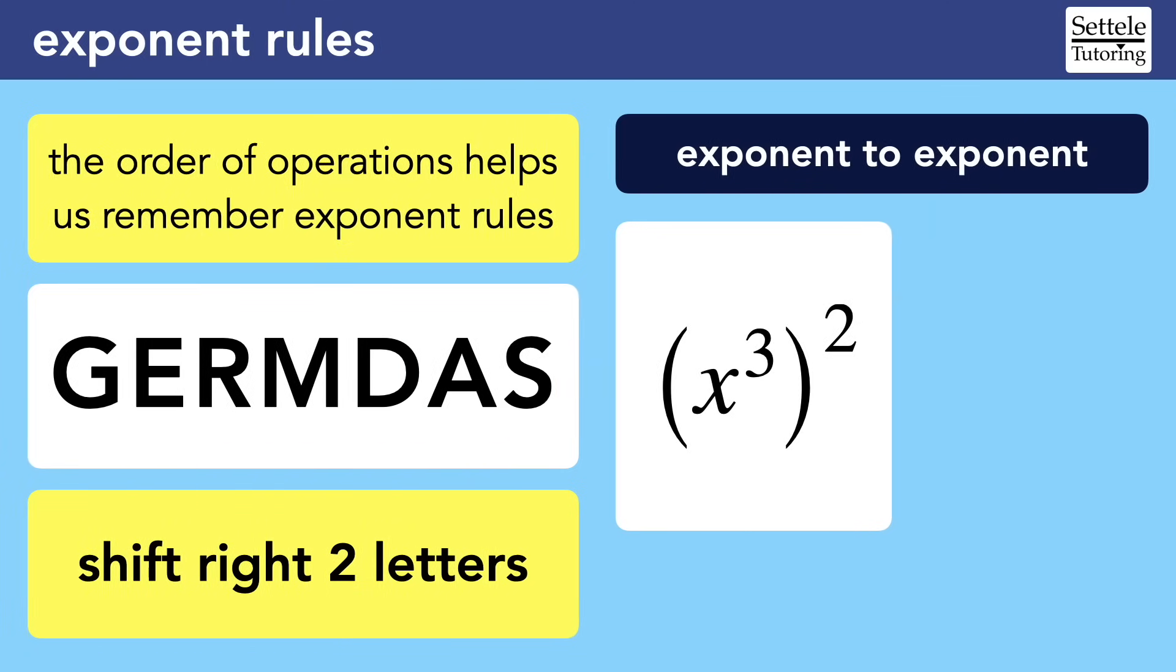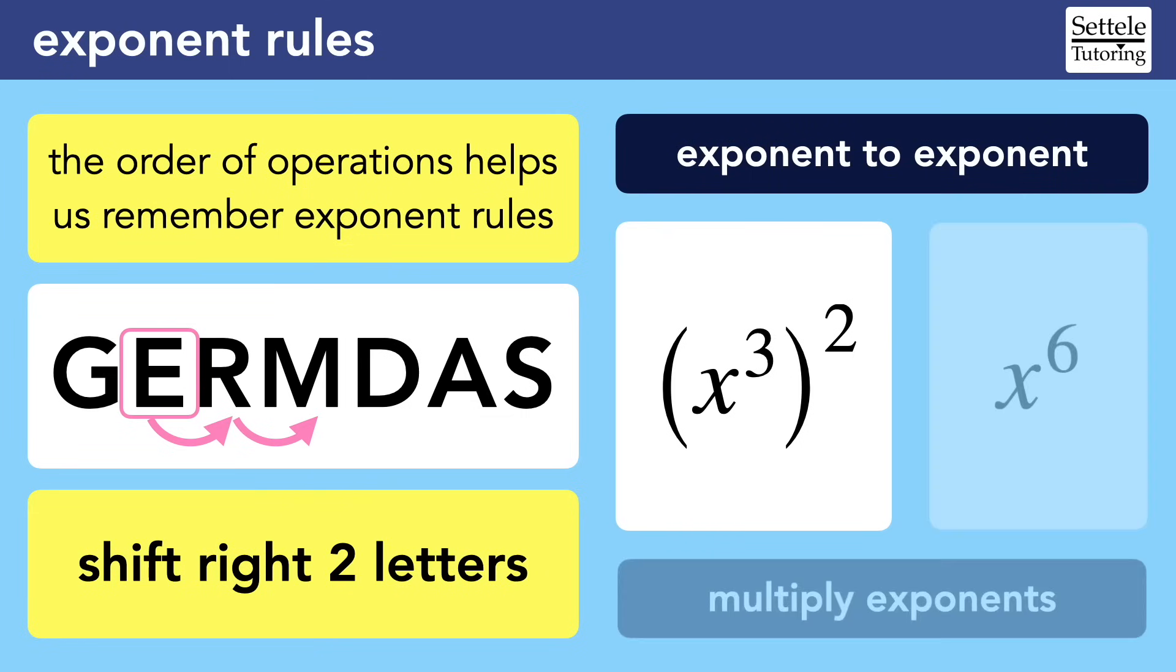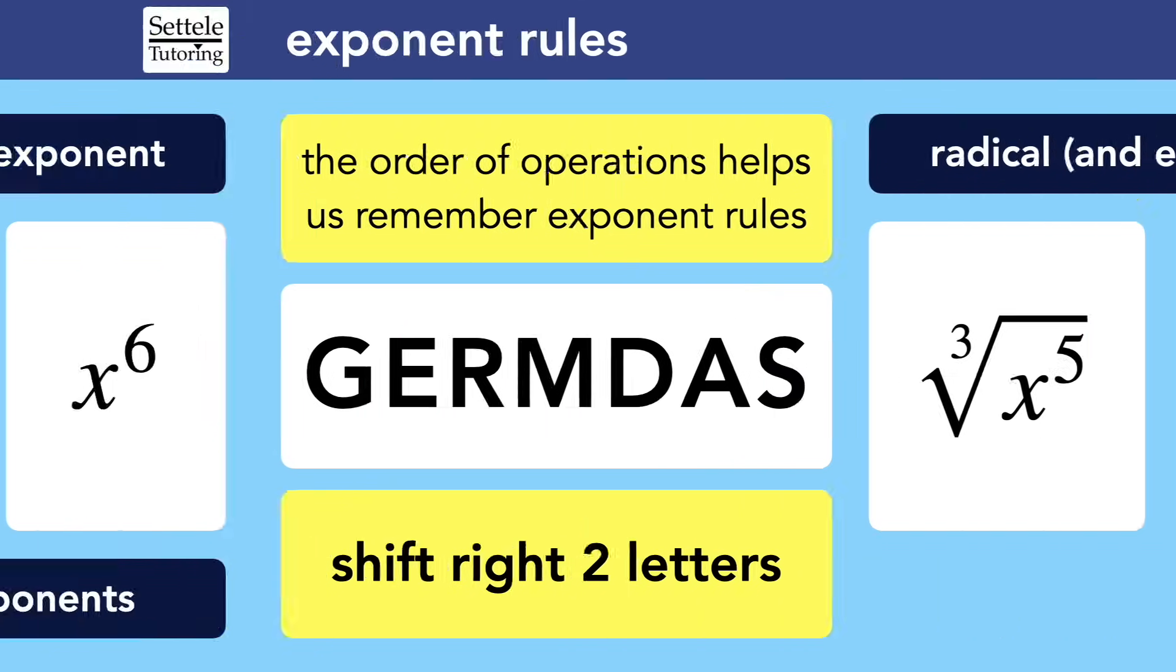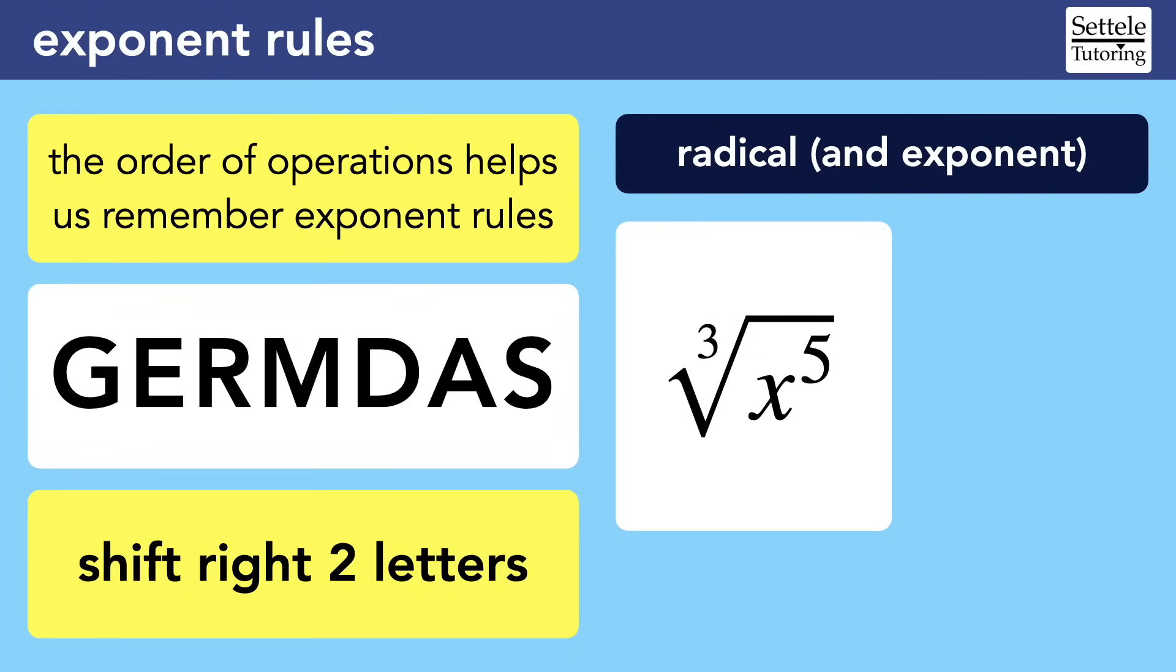In this case, we only have one base, but we still have two exponents. The operation is that we have an exponential term raised to another exponent. Find the E for exponent, shift right two letters, and we're reminded to multiply the exponents. 3 times 2 gives us a result of X to the sixth.